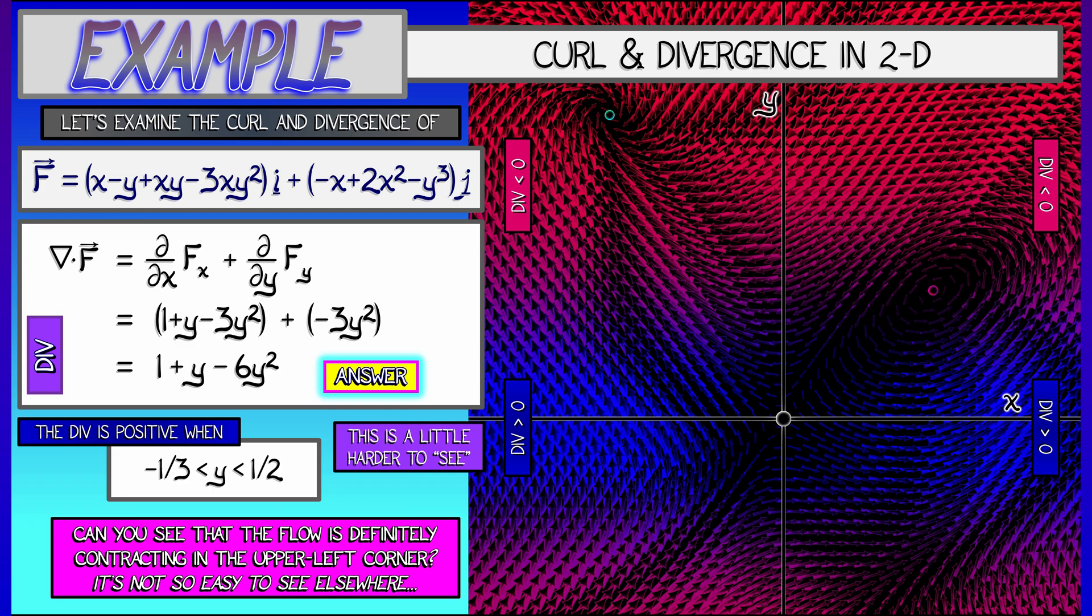So this combination of working with curl and divergence gives a really good way of seeing what that vector field is doing at a local infinitesimal level.